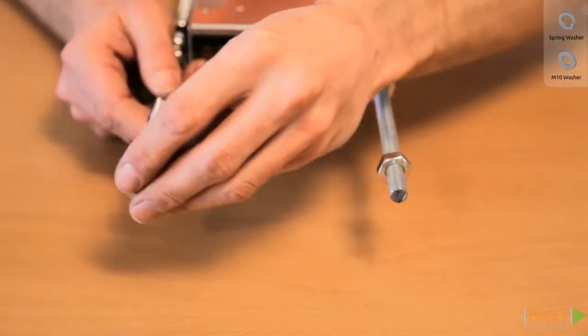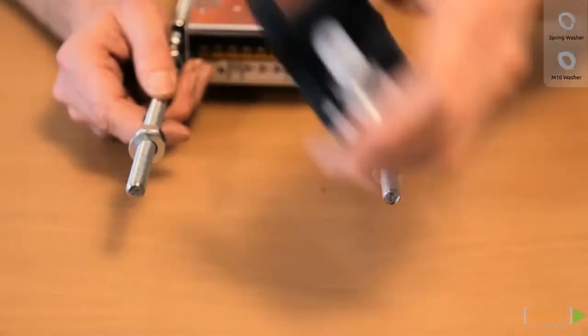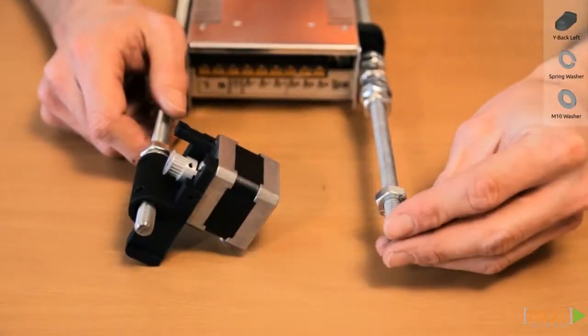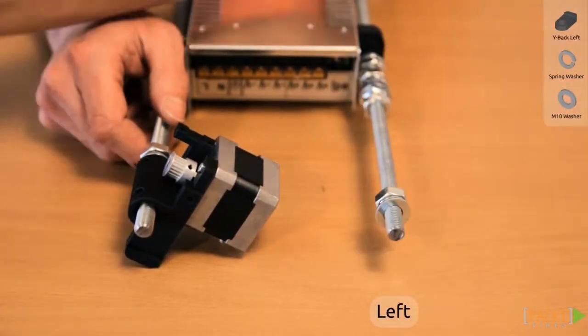Put a spring washer, a washer and the motor unit onto the M10 rod. Mount the rear left foot onto the left hand rod.